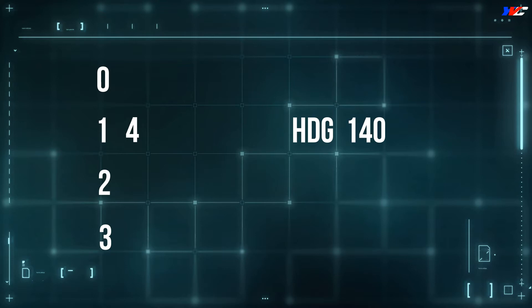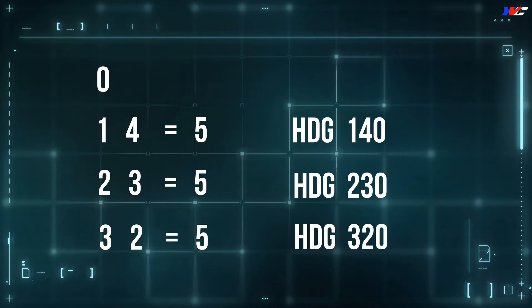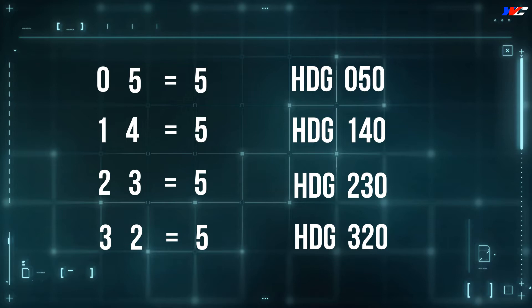Let's take Mumbai runway 14 as an example. Runway 14 is heading 140. Write 1 and 4 — 1 plus 4 equals 5. The next number in the sequence is 2. 2 plus what equals 5? 2 plus 3 equals 5, so the next heading is 230. Then next is 3. 3 plus what equals 5? 3 plus 2 equals 5, so 320 is the next heading. Finally, back to 0: 0 plus 5 equals 5, so 050 is the last heading. So the four traffic pattern headings are: 140, 230, 320, and 050.